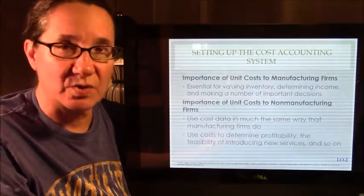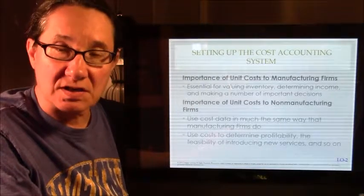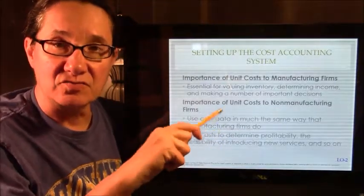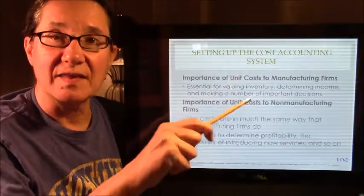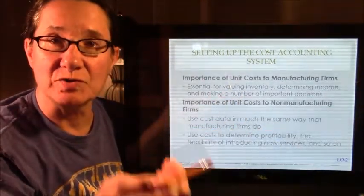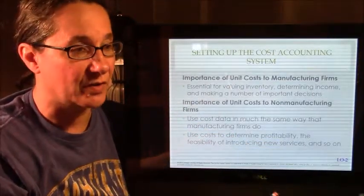Unit cost is important because it's your inventory. We build up the costs by taking direct materials, direct labor and overhead to work in process. That becomes finished goods inventory, which we sell. The costs that are in finished goods inventory become our cost of goods sold.